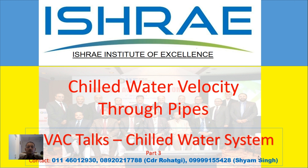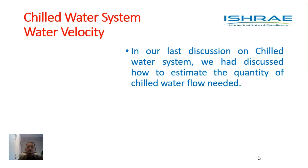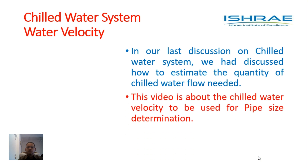Today the topic of discussion will be chilled water velocity through pipes — what should be the velocity of chilled water through the pipes and what is the effect of this velocity. In my last discussion, we had discussed how to estimate the quantity of chilled water flow needed for a particular load, and what is the temperature difference or temperature rise considered for chilled water in piping systems. Today we are going to talk about chilled water velocity to be used for pipe size determination.